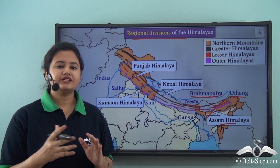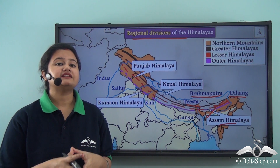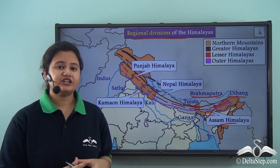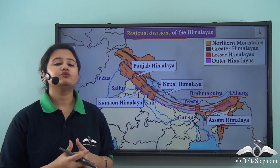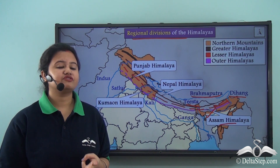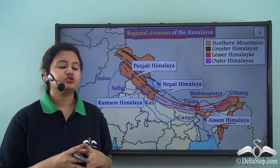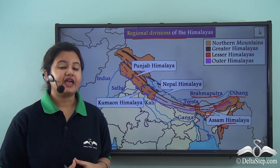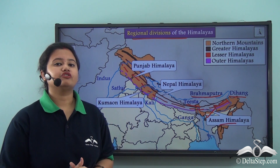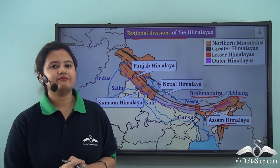In today's lesson we discussed an important physical division of India — the northern mountains, or the Himalayas. This mountain range is a collection of three parallel mountain ranges known as Himadri, Himachal, and Shivalik. We also discussed the important states that belong to the Himalayan region and the regional divisions of the Himalayas.